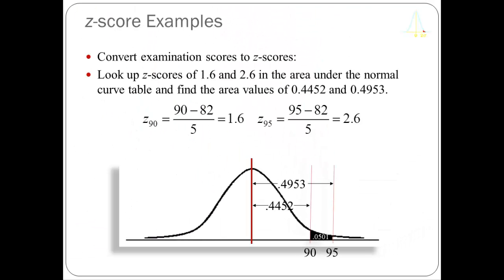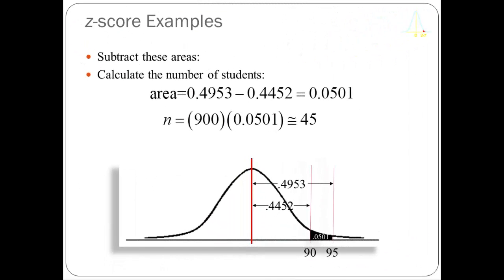That 0.0501 is a probability — if I were to draw a student at random out of those 900 students, the probability that student had a score between 90 and 95 would be 0.0501. Here I'm subtracting the areas to get that 0.0501, which is why I call this a subtraction problem. Multiplying that probability by 900, we find approximately 45 students in this region. Any time the mean is not in the area of interest, calculate the two Z-scores, look up the two areas, and calculate the difference.